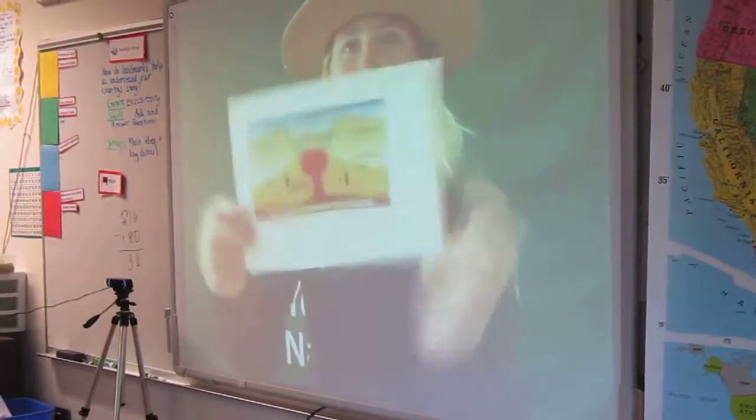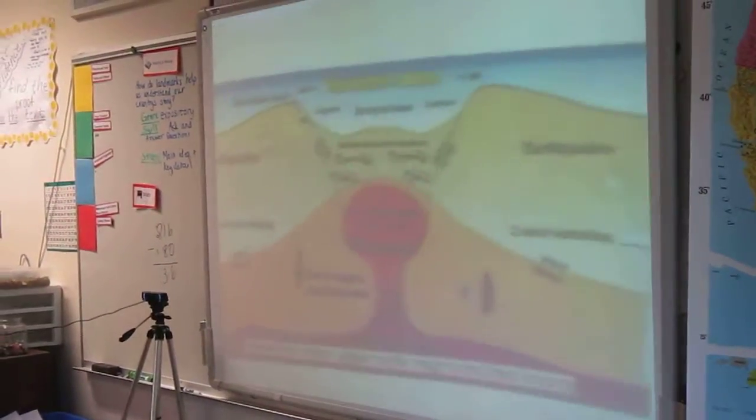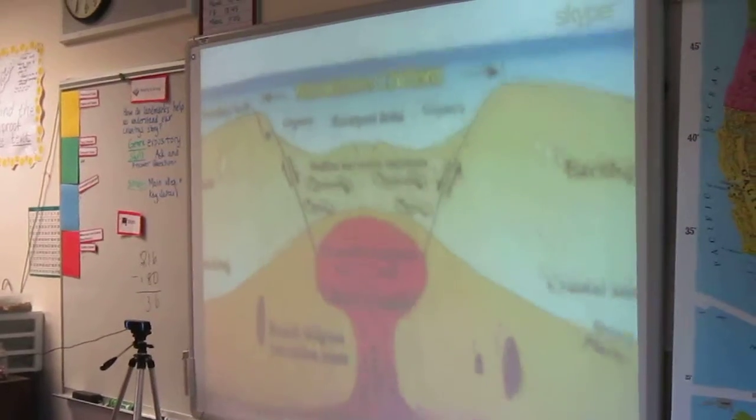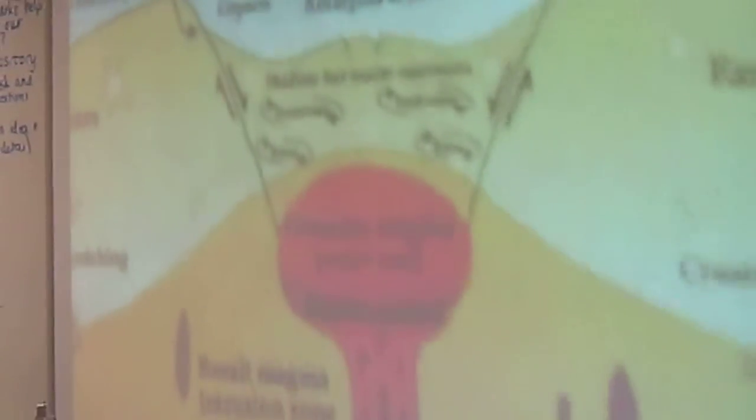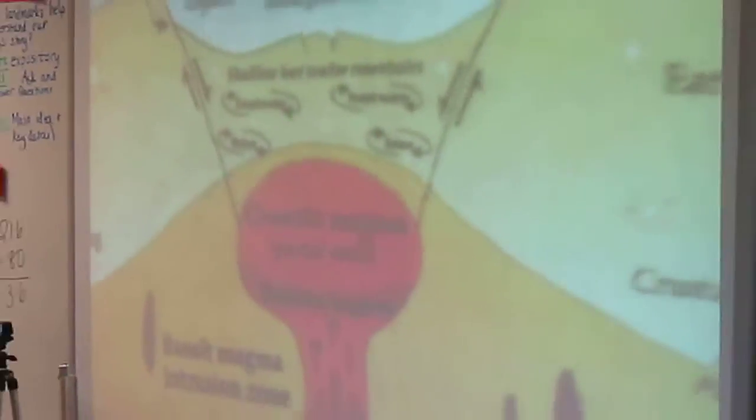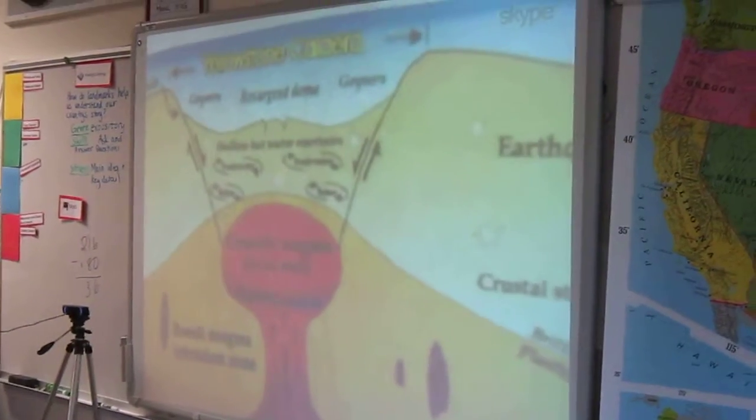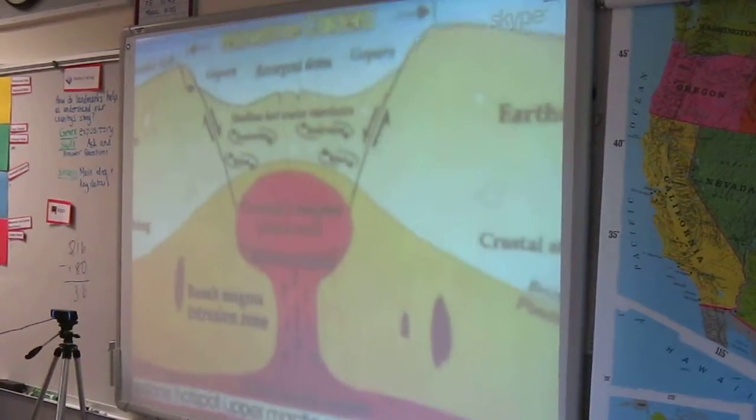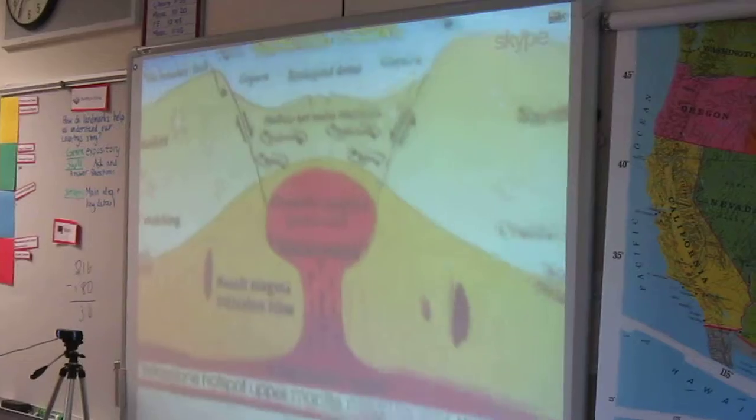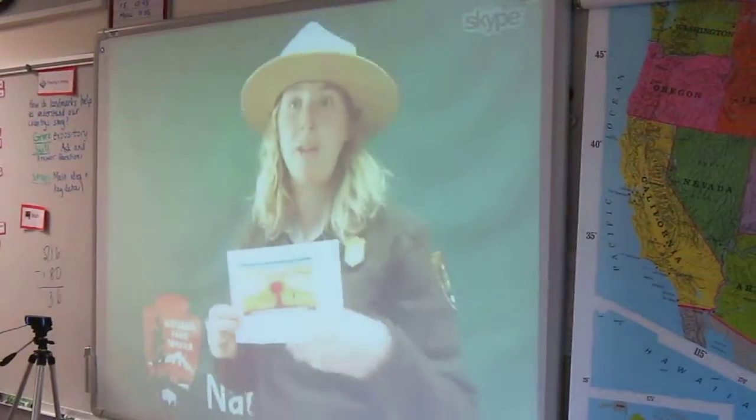So under the ground here at Yellowstone, we have a super volcano, so that red is representing the magma. So we have this bunch of magma under the ground, and that heats up a lot of the water in the park, the water that's underground.